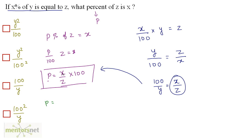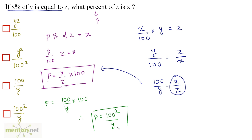We have the value of X upon Z as 100 upon Y. Substituting into our expression for P: P equals X upon Z times 100, which is 100 upon Y times 100. Therefore P is equal to 100 squared upon Y, and that is option D.